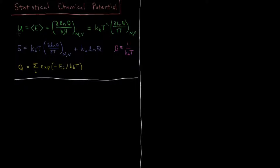To remind ourselves from previous videos, we have the internal energy — also equal to the expectation value of the energy — equal to the partial derivative of the natural log of the partition function Q with respect to the inverse temperature beta, defined as one over Boltzmann constant times temperature, at constant number of particles and volume. That is also equal to, if you do a substitution and evaluate the chain rule, kBT² times the partial derivative of log Q with respect to T at constant N and V.